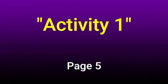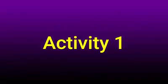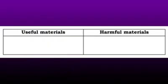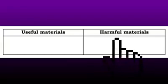Page 5, Activity 1. On your paper, write the title 'Activity 1' and copy the table I am showing on the screen. Pause this video while you are copying. In this table, under the column at the left, list the things that I will show you later which are useful. While under the right column, list what you think are the materials that are harmful. Are you ready? Here we go!